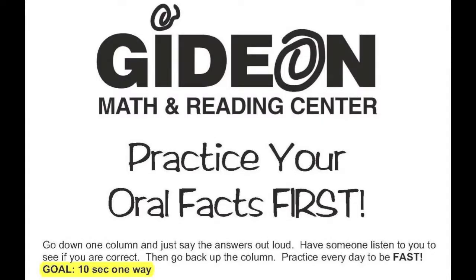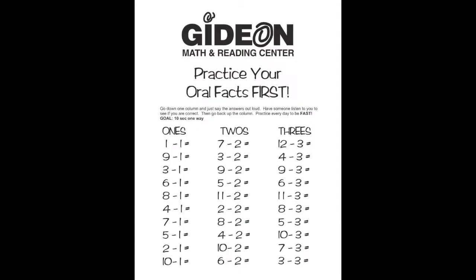Your goal is to go one way in 10 seconds or less. Do all 3 columns. Let's do the first few together. 0, 8, 2, 5.